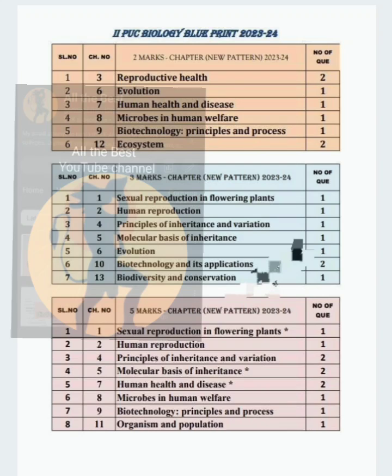Moving on to 3 marks. Chapter number 1, Sexual Reproduction in Flowering Plants — 1 question. Chapter number 2, Human Reproduction — 1 question. Chapter number 4, Principles of Inheritance and Variation — 1 question. Chapter number 5, Molecular Basis of Inheritance — 1 question for 3 marks. Chapter 6, Evolution — again 1 question for 3 marks. Chapter 10, Biotechnology and its Application — 2 questions for 3 marks. Chapter 13, Biodiversity and Conservation — 1 question for 3 marks.